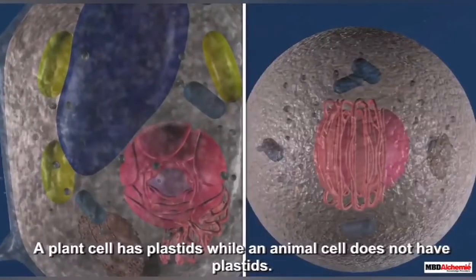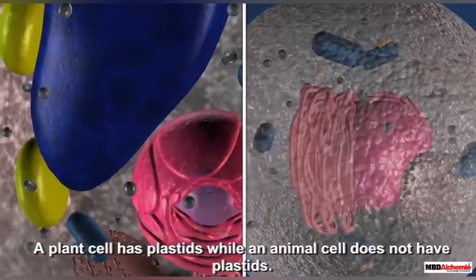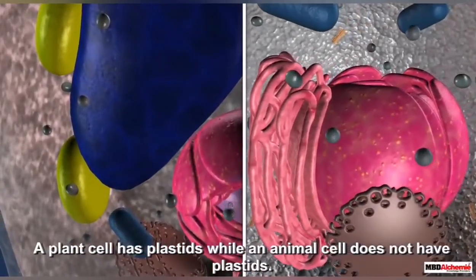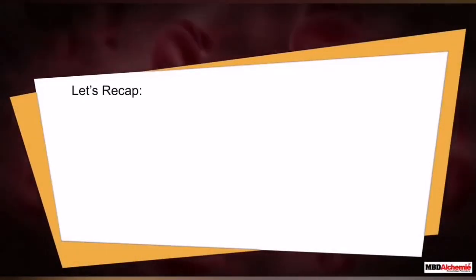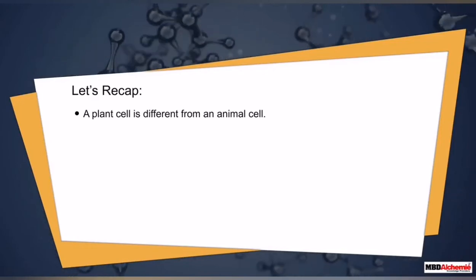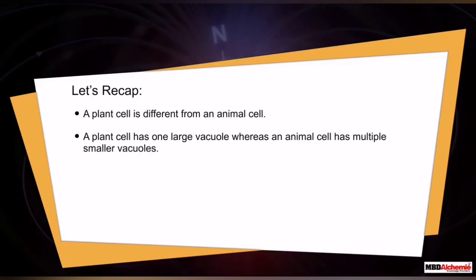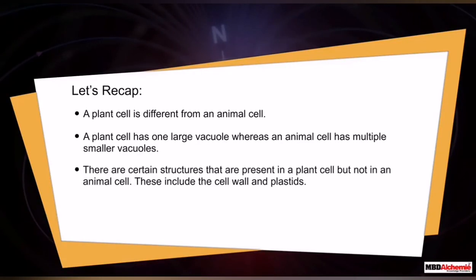One of the major differences between a plant cell and an animal cell is the presence of plastids. Let's recap: a plant cell has one large vacuole, whereas an animal cell has multiple smaller vacuoles. Certain structures are present in a plant cell but not in an animal cell, including the cell wall and plastids.